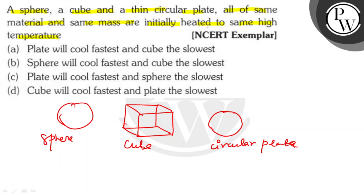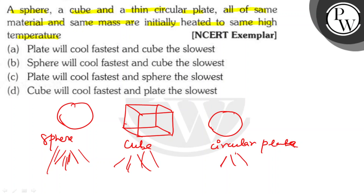Initially heated to some high temperature. How do we have a circular plate? They are cooling from high temperature — cooling from all sides. Heat and heat.